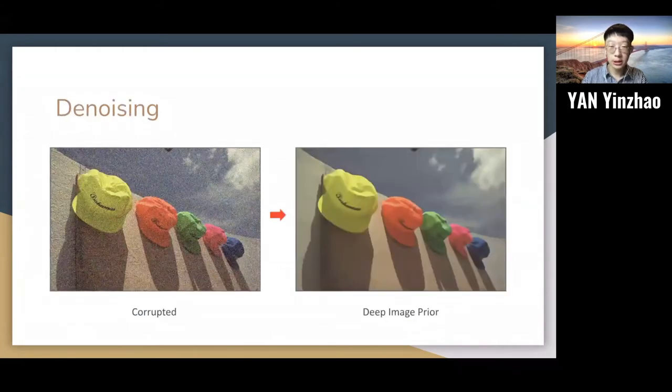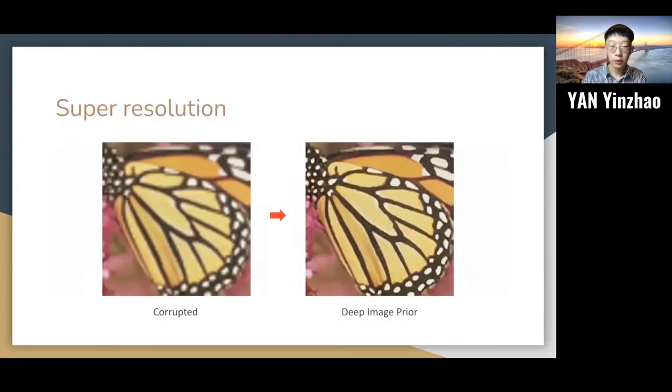For image denoising, originally we have an image with some noise, and after we apply the Deep Image Prior, we could get an image without noise. For super-resolution, originally we have a low-resolution image, and after we apply the Deep Image Prior, we could get a high-resolution image.